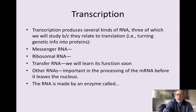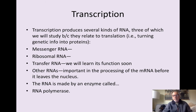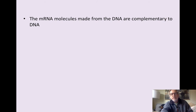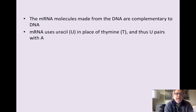RNAs are made by an enzyme during transcription, and that enzyme is called RNA polymerase. And since you learned about DNA polymerase, you now can understand why it was called RNA polymerase. This is the enzyme that makes the RNA polymer, the RNA chain. It's important to mention a couple of things about the mRNA molecules that are made. First of all, the mRNA molecules that are made from the DNA are complementary to the DNA that produce them. And the other thing is that mRNA uses uracil where a thymine would be in DNA. Thus, U pairs with A in an mRNA.